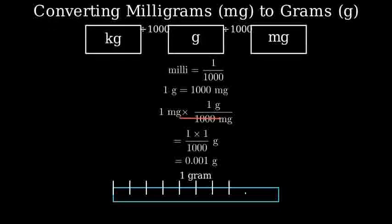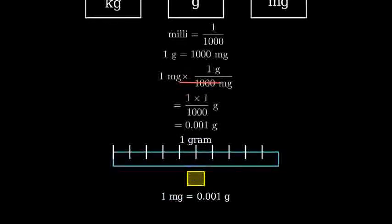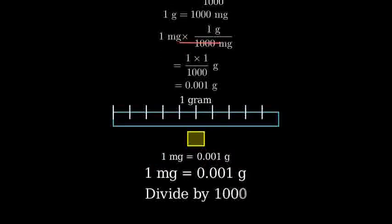So remember, to convert from milligrams to grams, divide by one thousand. One milligram equals 0.001 grams.